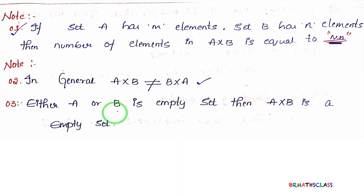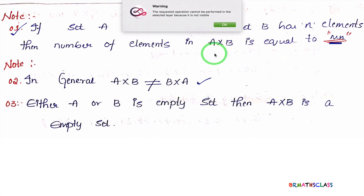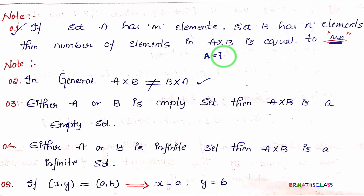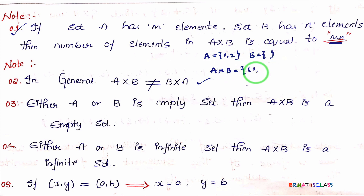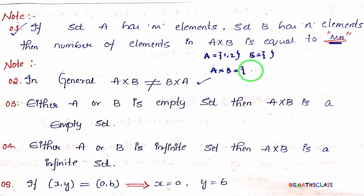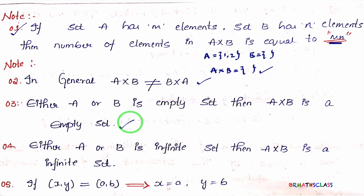Point 3: If either A or B is an empty set, then A cross B is also an empty set. For example, if set A is {1, 2} and set B is the empty set, when we try to form ordered pairs like 1 comma ___ or 2 comma ___, we cannot complete them — no ordered pair can be formed. Therefore A cross B is the empty set. Remember: if either set A or set B is empty, then A cross B is empty.